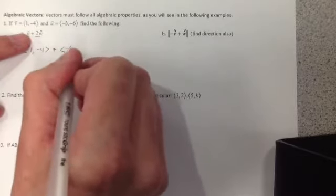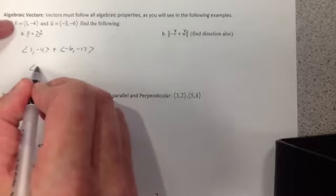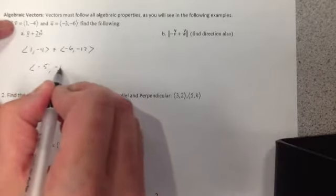We can do this in our head. That's negative 6, negative 12. And if I add them together, we get negative 5, negative 16.